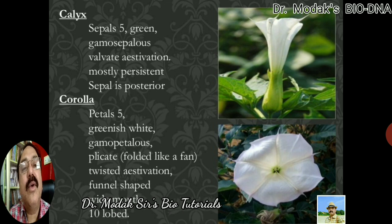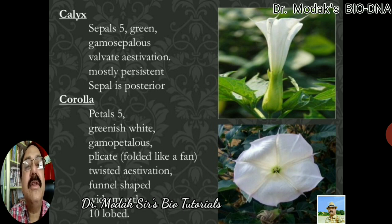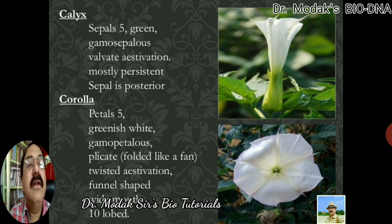The flowers are complete, having all floral whorls, regular, pentamerous, hypogynous, and usually white in color. If we talk about the calyx, there are five sepals — they are green — but all the sepals are adhered to each other and therefore gamosepalous, meaning sepals are fused. Their aestivation is valvate. The most important characteristic of this family is that the calyx is persistent — it remains for a longer period of time. As seen in brinjal and tomato, the sepals are still present along with the fruit; they do not shed — that is called persistent calyx.